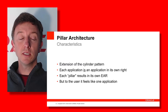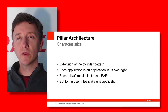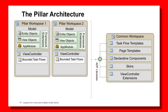Let's look at this diagrammatically. Here you can see an architectural diagram very similar to the cylinder architectural pattern we saw earlier on. On the right-hand side, in the common workspace, we've got our typical task flow templates, page templates, and so on — the most reusable components that don't change a lot.